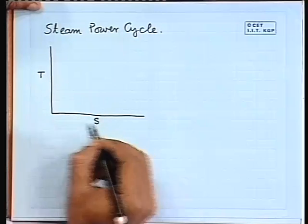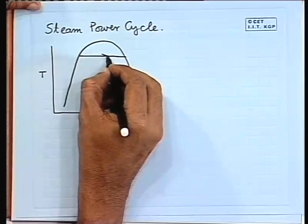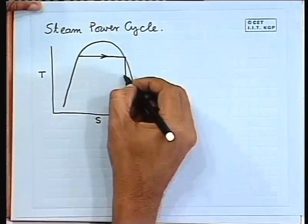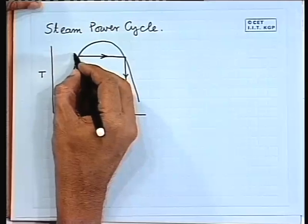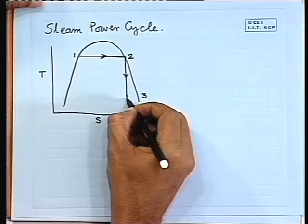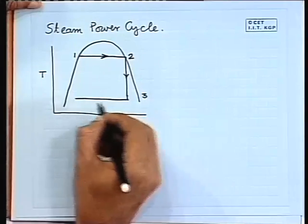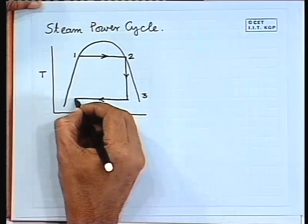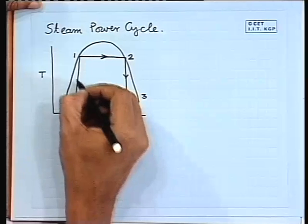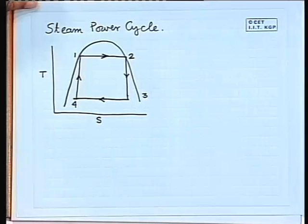This is the T-S plane and we are trying to construct a Carnot cycle. This is the process of heat input; it is inside the two-phase dome, so basically it is an evaporation or boiling process. In this process temperature remains constant, so this is isothermal heat addition. Then from 2 to 3 is a reversible adiabatic expansion process. Then 3 to 4 is a reversible isothermal heat rejection process — a condensation process. And from 4 to 1 we go back by a reversible adiabatic compression process.